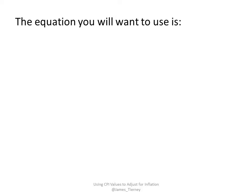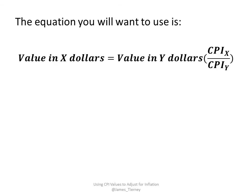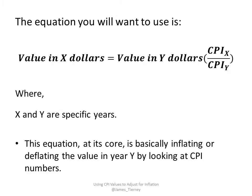The equation you will want to use is the following. The value in X dollars is equal to the value in Y dollars multiplied by CPI in year X divided by CPI in year Y, where X and Y are specific years. This equation, at its core, is basically inflating or deflating the value in year Y by looking at CPI numbers.